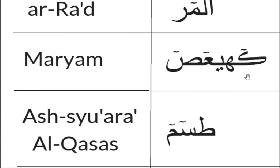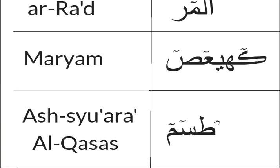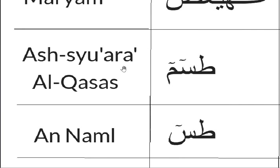Kaf-Ha-Ya-Ain-Sad: Kaf is 6 harakat, Ha is 2 harakat, Ya is 6 harakat, Ain is 2 harakat, 2 harakat, Sad is 6 harakat at the end — as in surah Ash-Shu'ara and Al-Qasas.